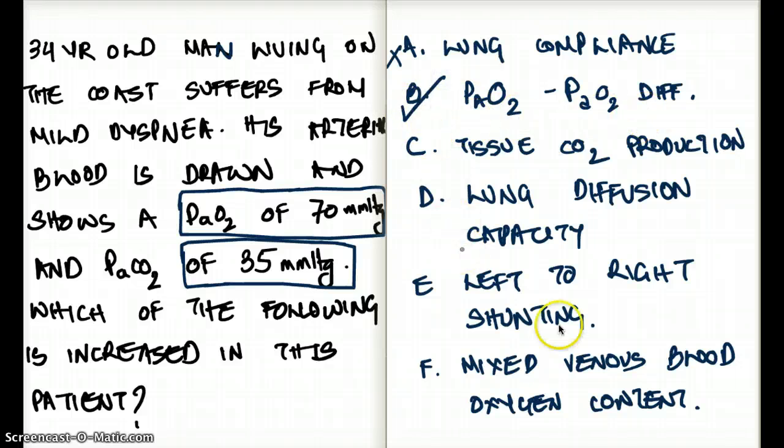Tissue carbon dioxide production? No, this question doesn't really deal with tissue carbon dioxide production. And the carbon dioxide was 35, usually they're close to 40, so that is not my concern. So that is also not the answer. Lung diffusion capacity? Now that is a possible answer.